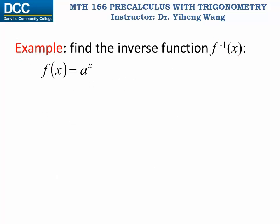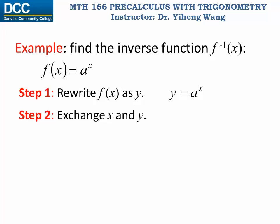If you still remember how to find the inverse function for a given function, let's try to follow those procedures to find the inverse function for this exponential function f equals to a to the power of x. The first step is to rewrite f as y, so we have y equals to a to the power of x. Step two, exchange x and y. So now y becomes the exponent.